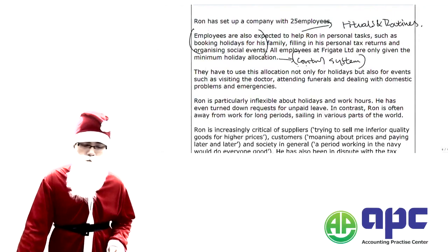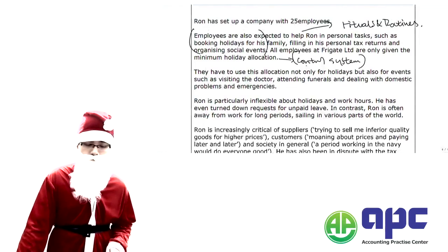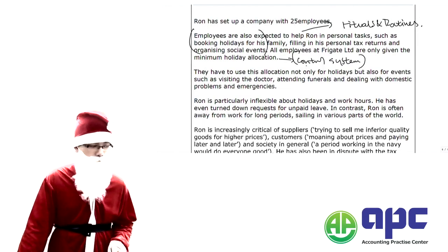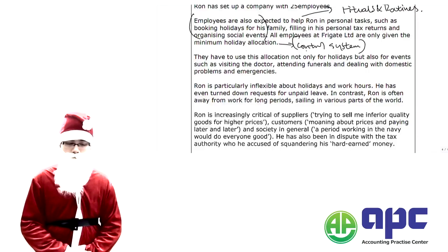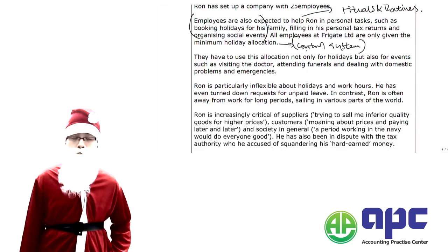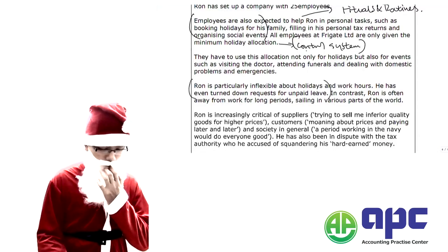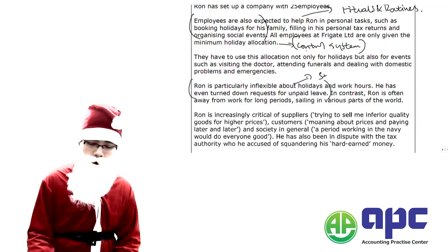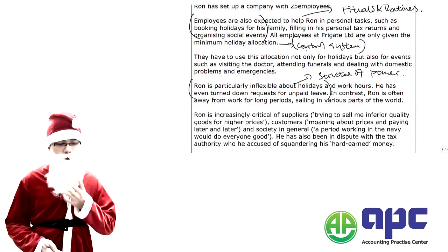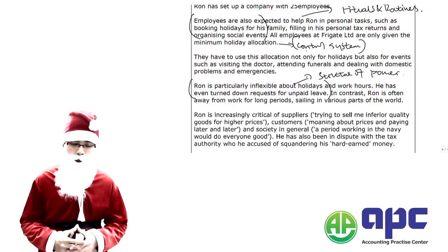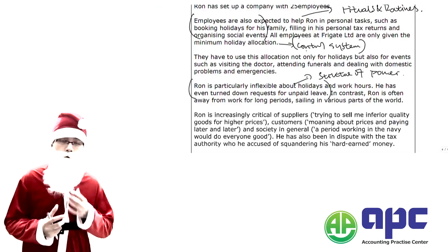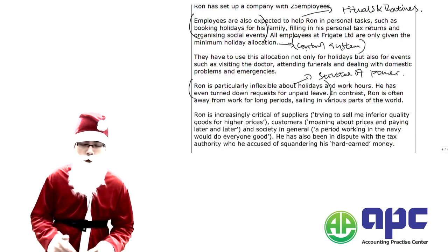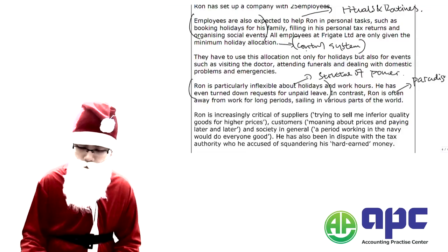Employees also have to use their holiday allocation for events such as visiting the doctor, attending funerals, and dealing with domestic emergencies — further examples of the Control System. Ron is particularly inflexible about holidays and work hours, and has even turned down requests for unpaid leave. So it is up to Ron to make all decisions, which reflects the Structure of Power. In contrast, Ron is often away from work for long periods sailing around the world, suggesting his primary objective is not profit but to relax and enjoy life — this is reflected in the Paradigm.